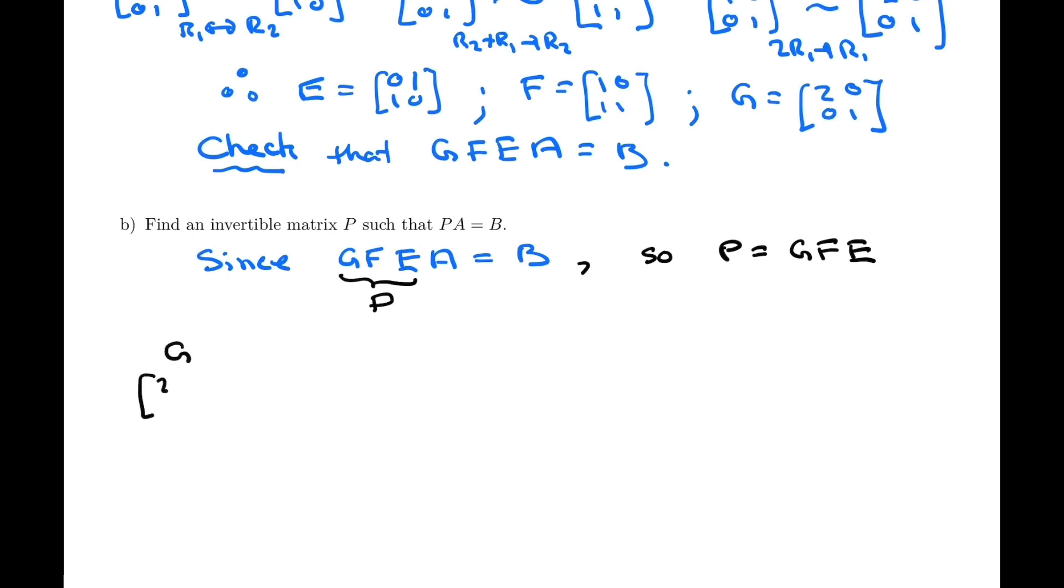So let's actually find the matrix P. And so GFE means matrix 2, 0, 0, 1 times the matrix 1, 0, 1, 1 times the matrix 0, 1, 1, 0. That's the matrix GFE. Matrix multiplication is associative, so you can do these two first if you like. So if you multiply the first two, you're going to get GF. So we can start with matrix GF, and then we're going to multiply that by E.